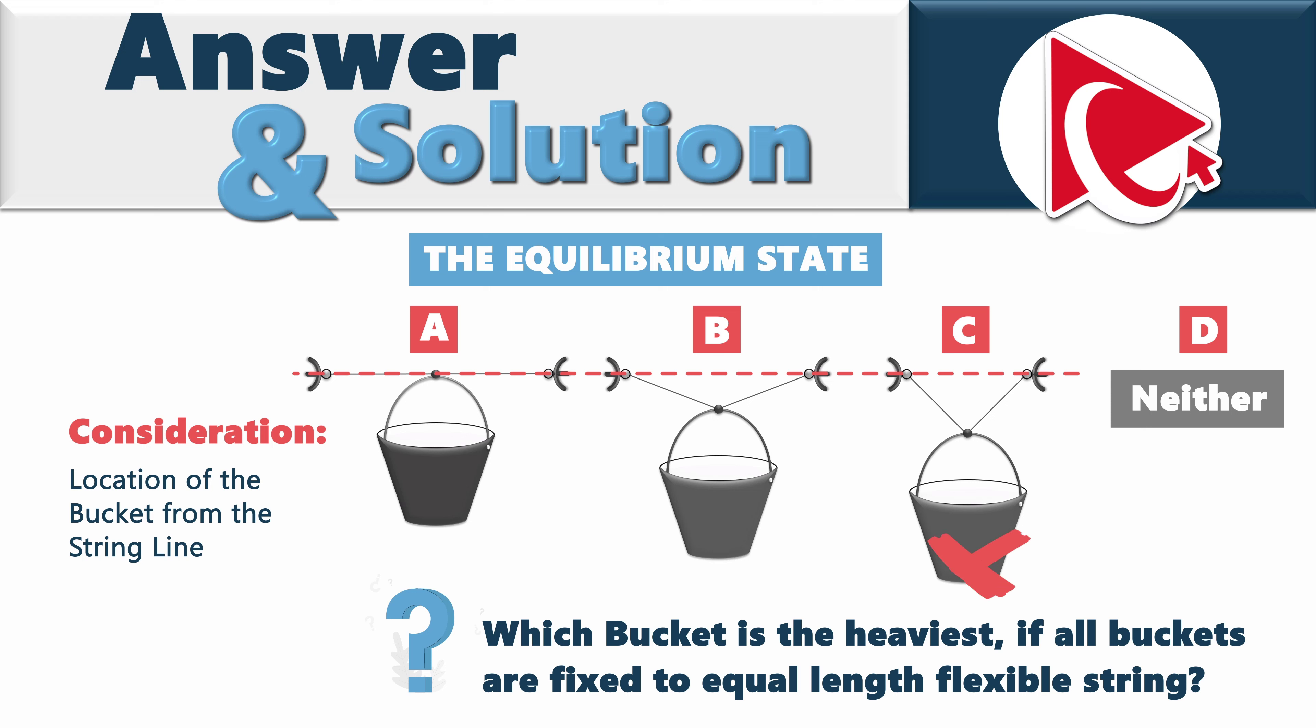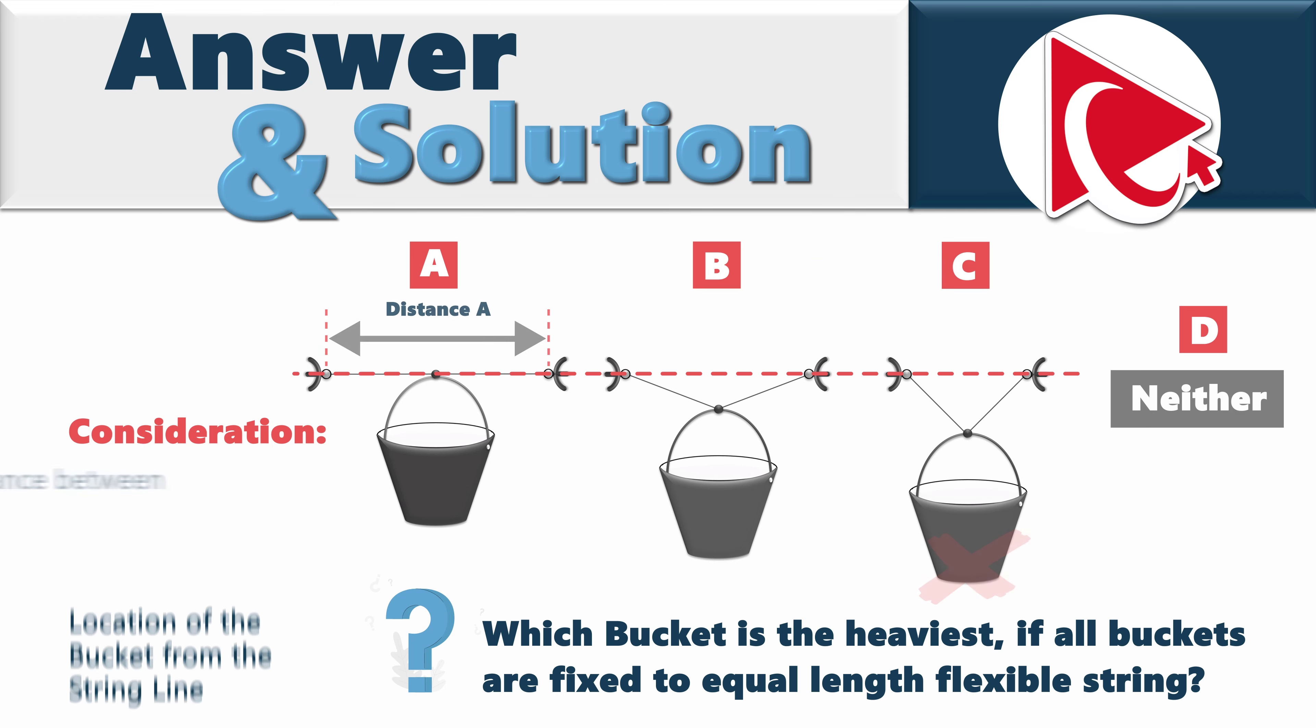This visual cue of the lower position of bucket C can give you an impression that bucket C is heavier, even though it may or may not be the case in reality. But here's the caveat: This would only be true if the distance between string connectors would be the same. This introduces another consideration here, because distance A for bucket A is greater than distance B, which is greater than distance C for bucket C.